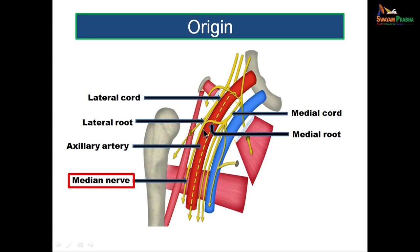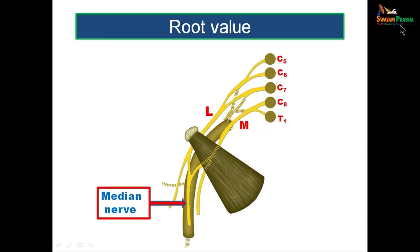The lateral cord carries fibers from cervical spinal segments C5, C6, and C7. The medial cord has a root value of C8 and T1 — C8 from the cervical spinal segment and T1 from the thoracic spinal segment. These two roots join together to form the median nerve. So the median nerve ultimately has all the fibers of the brachial plexus — that is C5 to C8 and T1.